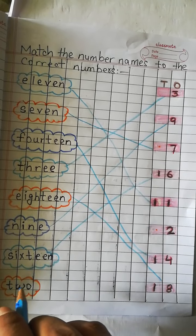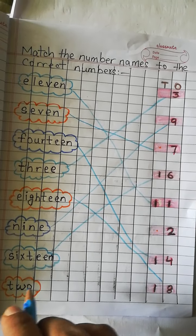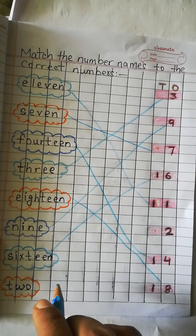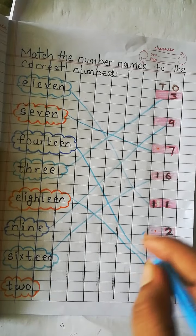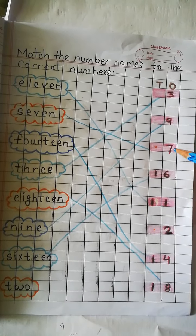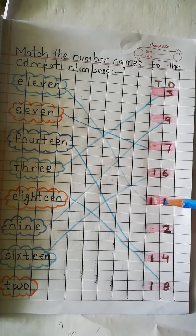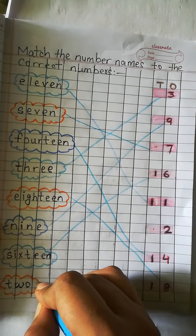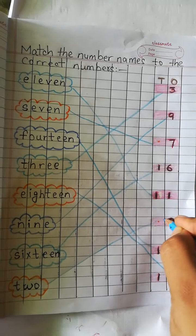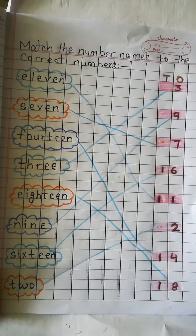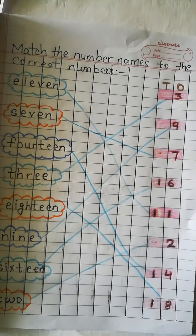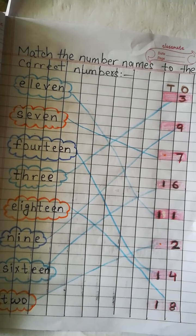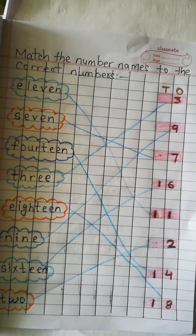Now, TWO — T-W-O — 2. Let's find number 2. Where is number 2? Yes, number 2. Let's match. So children, you have to do it in your copy as I have done here.